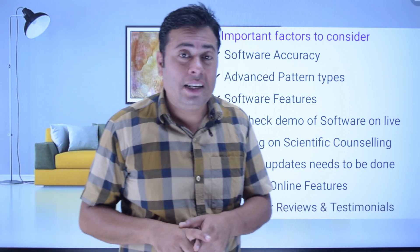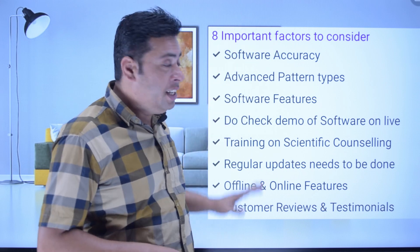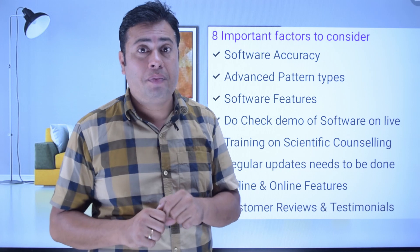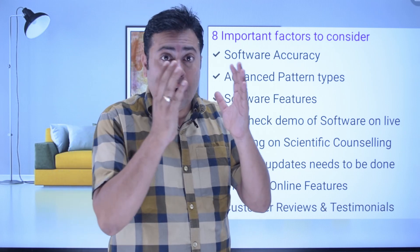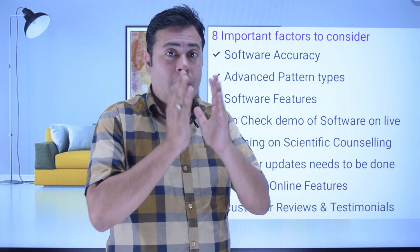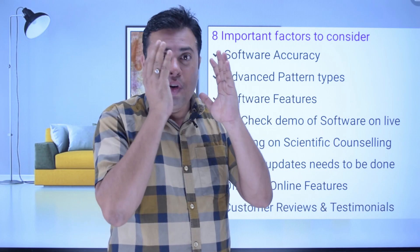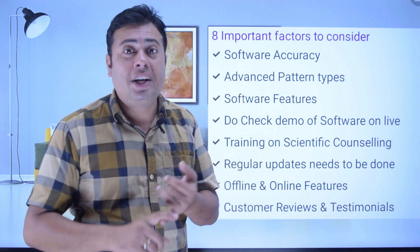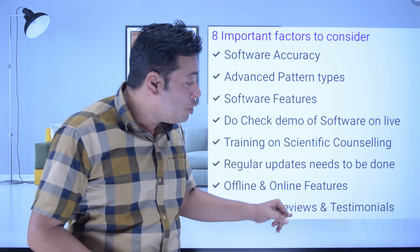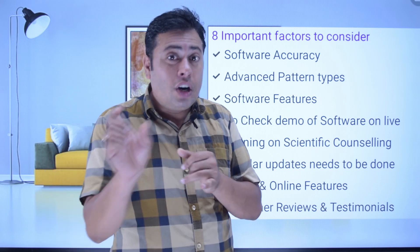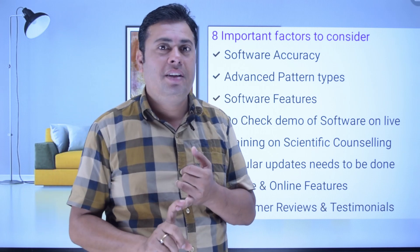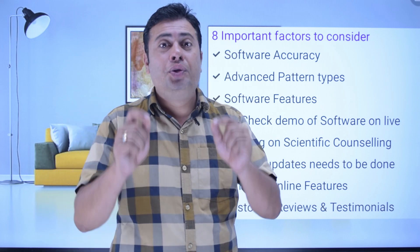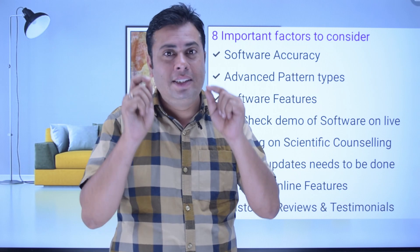The eighth factor is customer reviews. Go to their website and check the quality — the quality of their website itself reflects the quality of their software. Check their Google reviews and also see testimonials. Don't just look at written testimonials — look for video testimonials. By checking all these eight factors, you can definitely choose the best company to buy the DMIT software.